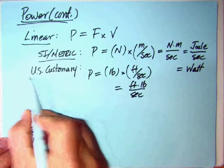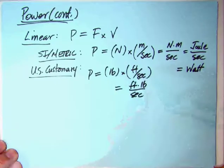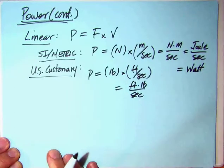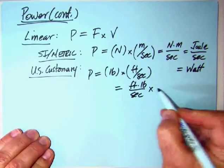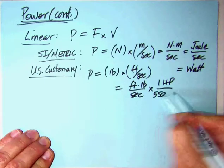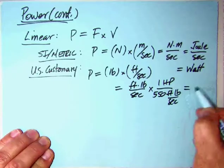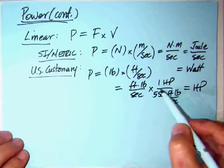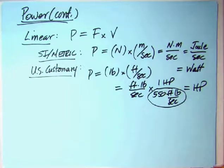For the U.S. customary, power is force times velocity. We've got pounds times feet per second, which gives us foot-pound per second. However, in this particular conversion, we've got one horsepower divided by 550 foot-pound per second. So what we've got in the U.S. customary is this somewhat troublesome conversion: 550 foot-pound per second per horsepower.